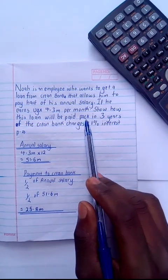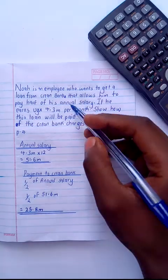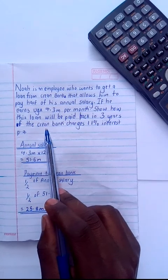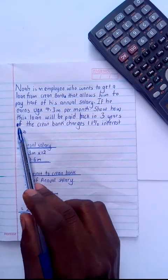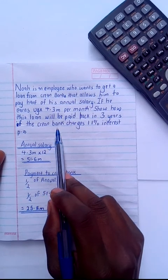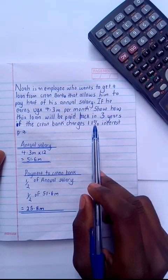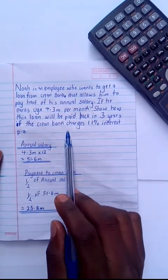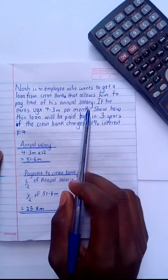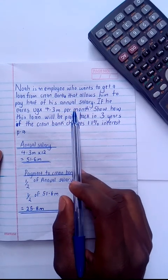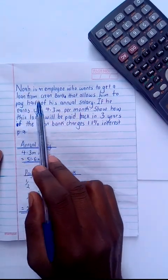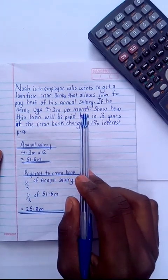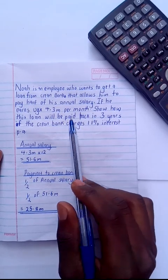Paid back in three years if the Crane Bank charges 11 percent interest per annum. With this I've already told you it's somewhat tricky, so you're going to first look at the salary that Noah is receiving. Noah is receiving 4.3 million per month, so I want the annual, not per month.